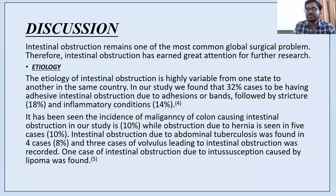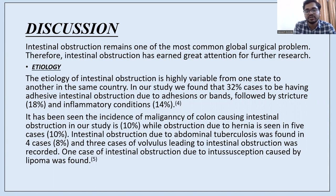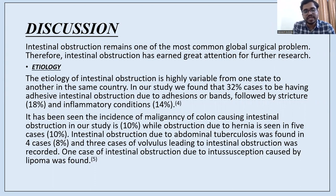Intestinal obstruction remains one of the most common global surgical problems and has earned great attention for further research. Etiology is highly variable from one region to another. In our study, 32% of cases had adhesive intestinal obstruction due to adhesion bands, followed by stricture at 18% and inflammatory conditions at 14%. Malignancy of the colon causing intestinal obstruction accounted for 10%, hernia in 5 cases, abdominal tuberculosis in 4 cases (8%), 3 cases of volvulus, and one case due to intestinal lipoma.